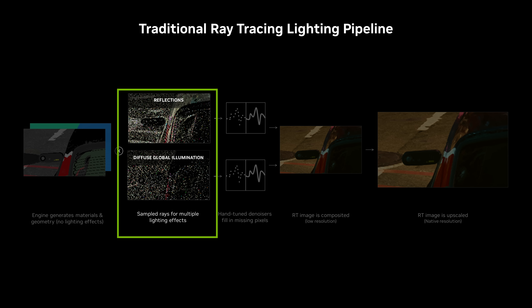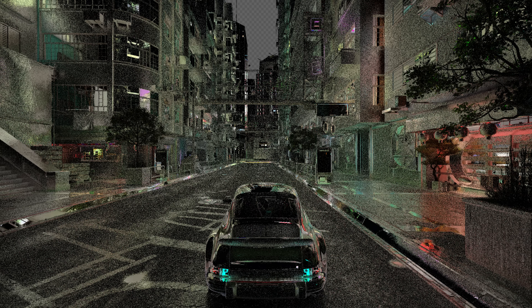But we can never send enough rays into the scene to understand exactly how the scene looks, because there are so many pixels and because the rays don't distribute themselves evenly throughout the scene. There's always holes in our understanding of every scene.